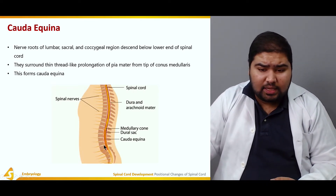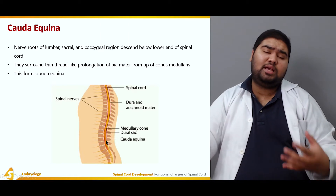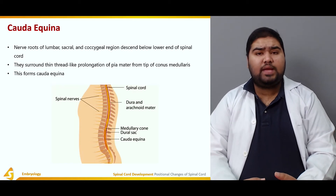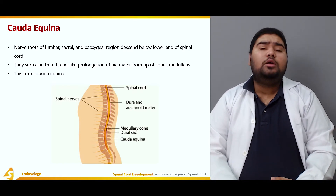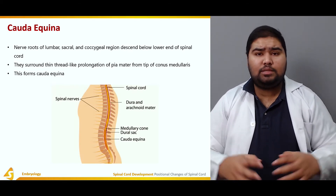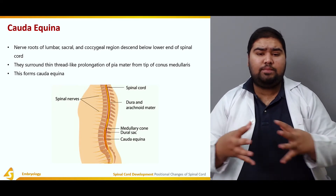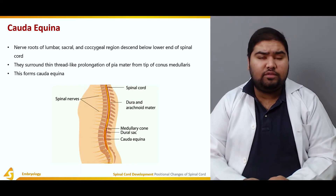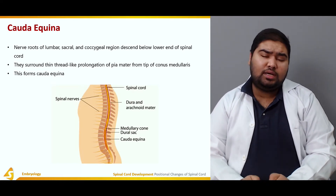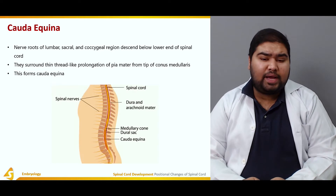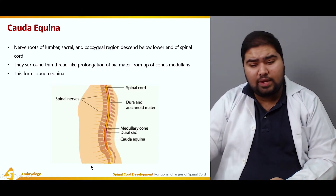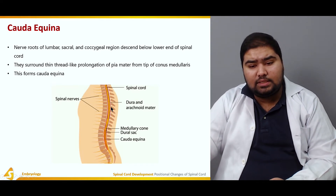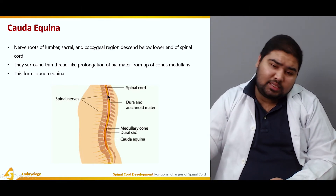This forms the cauda equina. The cauda equina is a protective sheath formed by the prolongation of pia mater from the tip of the conus medullaris. It protects the lumbar, sacral, and coccygeal nerve roots that come to lie below the terminated spinal cord. In the figure, you can see the cauda equina, the medullary cone, the dura and arachnoid matter, and the spinal cord in yellow at the center.